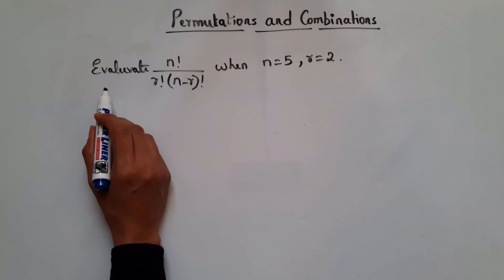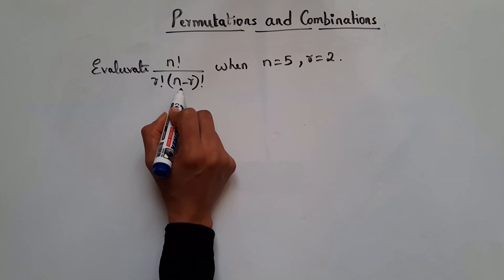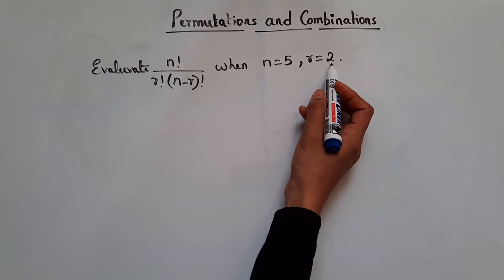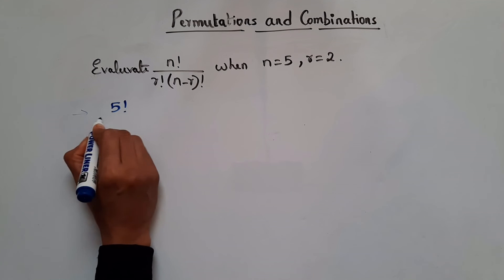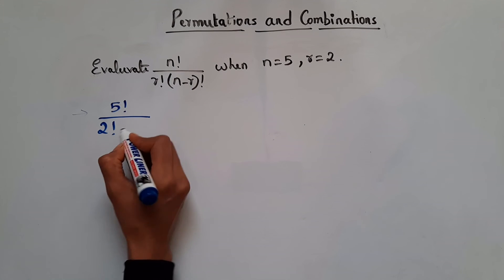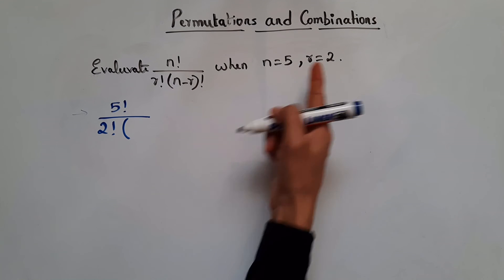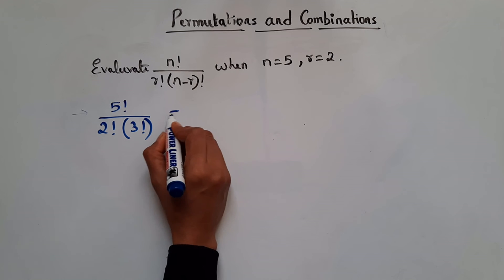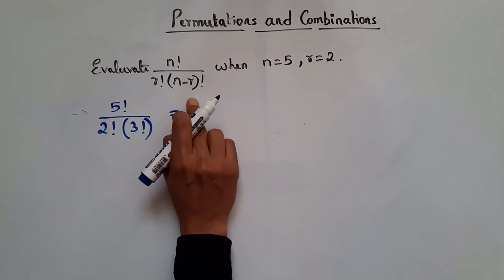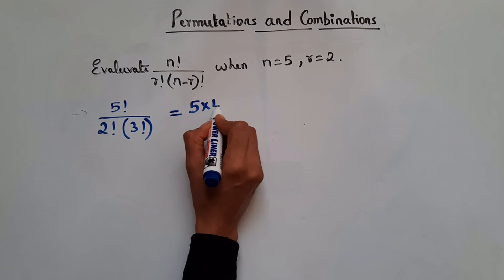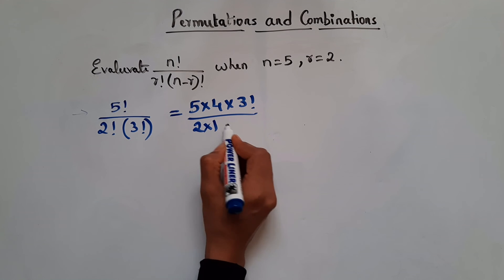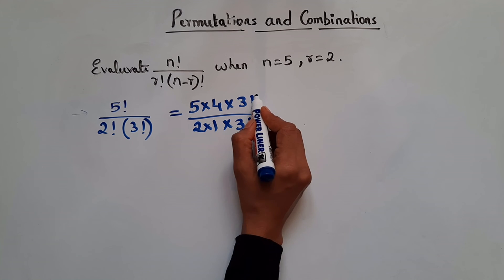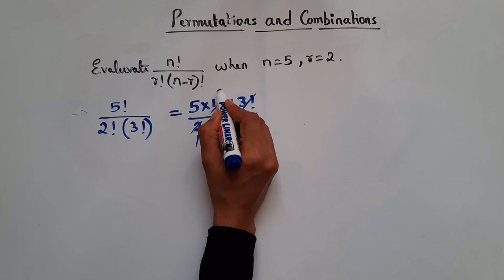Evaluate n factorial divided by (r factorial × (n−r) factorial) when n = 5 and r = 2. Substituting, we get 5 factorial divided by (2 factorial × 3 factorial). Writing 5 factorial as 5 × 4 × 3 factorial, and 2 factorial as 2 × 1, we cancel 3 factorial. So we get (5 × 4) / (2 × 1) = 20 / 2 = 10.